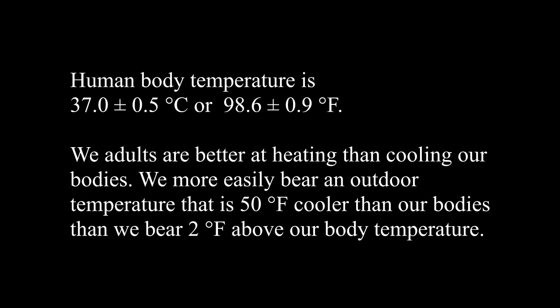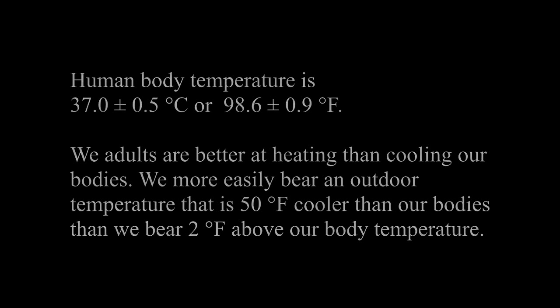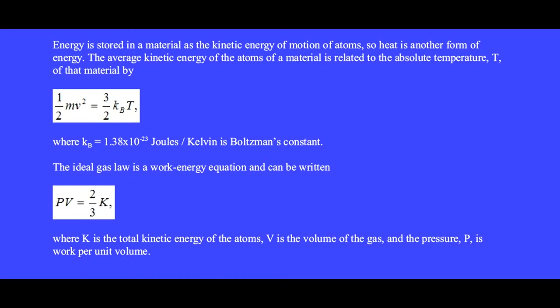Human body temperature is 37 centigrade or 98.6 Fahrenheit. We adults are better at heating than cooling our bodies. We more easily bear an outdoor temperature that is 50 degrees Fahrenheit cooler than our bodies than we bear 2 degrees Fahrenheit above our body temperature. Energy is stored in a material as the kinetic energy of motion of atoms. So heat is another form of energy. The average kinetic energy of the atoms of the material is related to the absolute temperature T of that material by one half mV squared equals three halves kBT, where kB is Boltzmann's constant which serves as a conversion factor between energy in joules and temperature in Kelvin. The ideal gas law is a work energy equation and can be written in terms of the total kinetic energy of atoms, the volume of the gas, and the pressure PE, which is work per unit volume.